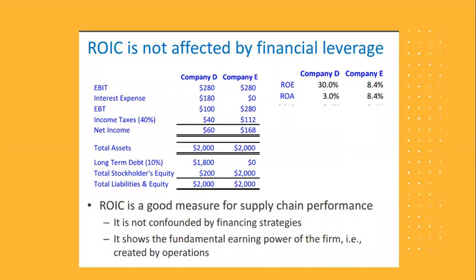With that, this lecture comes to an end. Key takeaways: what supply chain finance is and the options companies have to finance their supply chains, factoring with recourse, factoring without recourse, and how you can use ratios to really understand how a company is performing — which is very, very important. Also, ratios should not be taken in isolation; they should be compared and used in a benchmarking kind of way. Thank you very much for your time, and I hope you enjoy this lecture. Take good care.